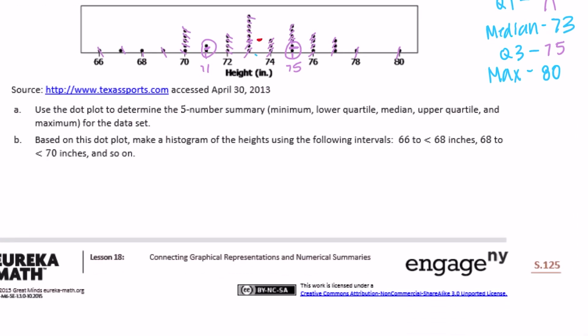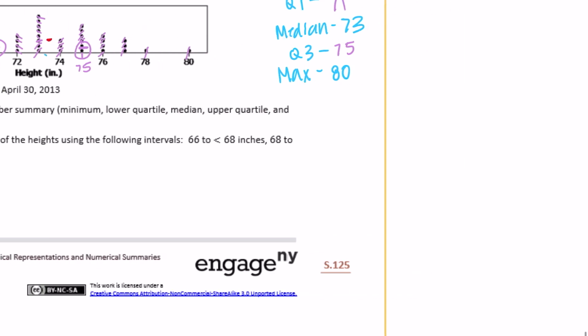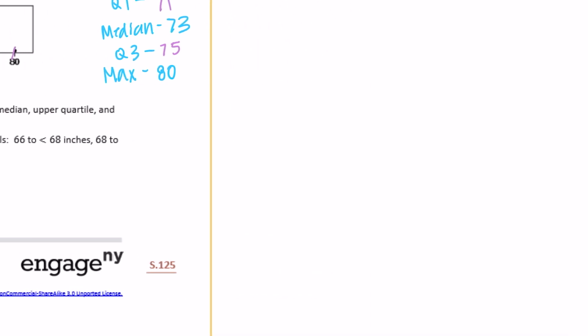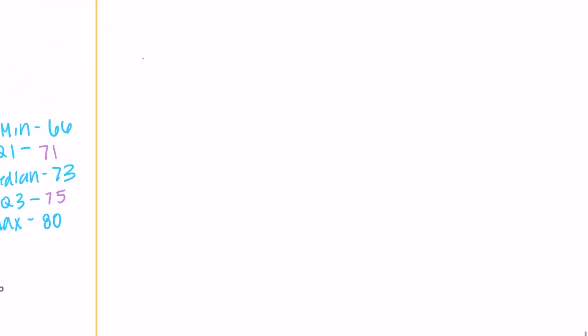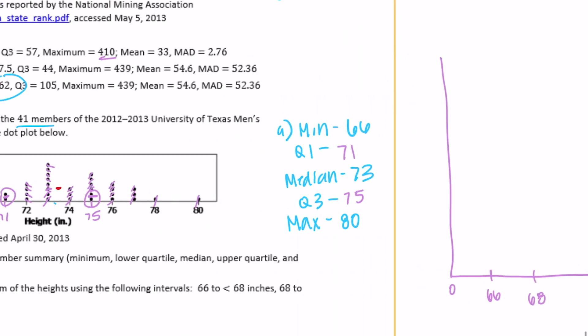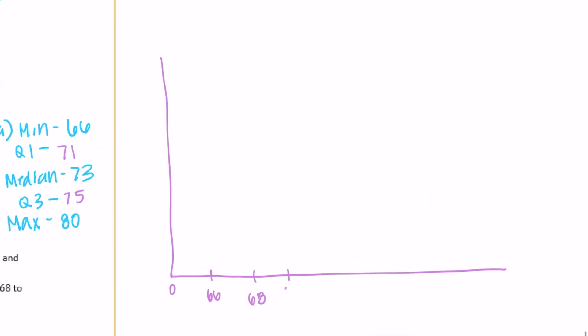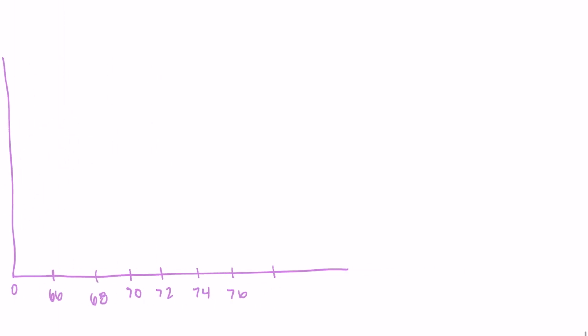B: Based on this dot plot make a histogram of the heights using the following intervals: 66 to less than 68, 68 to less than 70, and so on. Let's get our histogram going here. We want to start at 66 and it wants us to go by 2s, so we need to go all the way up to 80. 70, 72, 74, 76, 78, 80. I'll even do 82.